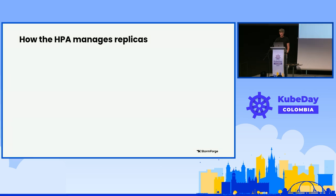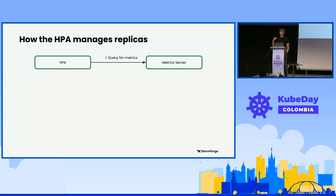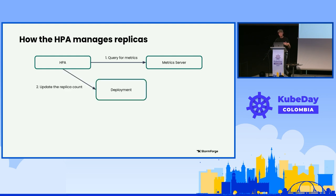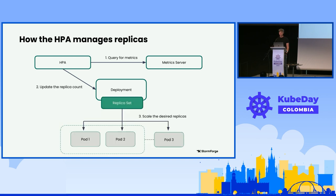Let's start with horizontal autoscaling. How many people here have used the HPA or done horizontal autoscaling on Kubernetes? The way the HPA works is it constantly watches the metric server, which tracks things like CPU and memory usage and requests for all pods, nodes, and the cluster. It will then update the replica count for whatever object it's managing - stateful sets, deployments, Argo rollouts, and even custom resources that implement the scale subresource. That object is then responsible for rolling out or removing pods.